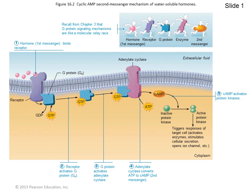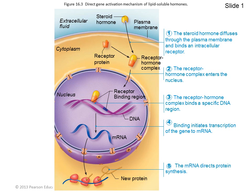Examples of these cellular responses include altering plasma membrane permeability or membrane potential by opening or closing ion channels, stimulating synthesis of enzymes or other proteins, activating or deactivating enzymes, inducing secretory activities, and stimulating mitosis.